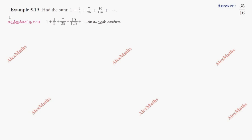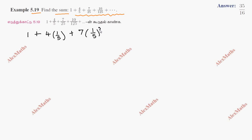Hi students, this is Alex here. Example 5.19: Find the sum of the following series. The series is dot dot dot — this is an infinite series. If we rearrange the series: 1, plus 4 into 1 by 5, plus 7 into 1 by 25 (which is 1 by 5 whole square), plus 10 into 1 by 5 whole cube, dot dot dot.